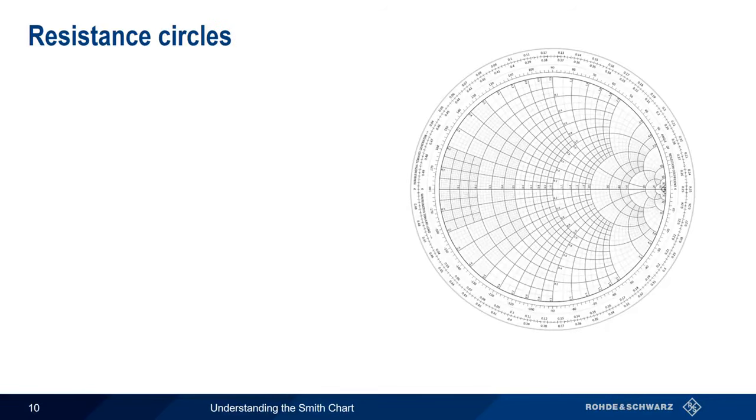Most loads, however, have both a resistive and a reactive part, so a complex Z sub L will not lie on the resistive axis. How then do we represent the resistive part of a complex impedance?